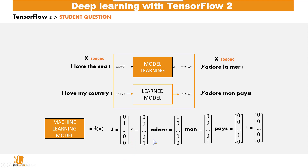A common vector representation is the one-hot representation, wherein we have a vocabulary of possible words, and each word has a particular position in that vocabulary. For example, the word 'j' occupies the second position, 'adore' occupies the first position, 'mon' occupies the last position, and 'pays' occupies the second-to-last position. So instead of passing the model the word 'adore,' we instead pass this vector made up of numbers, which the mathematical function understands.